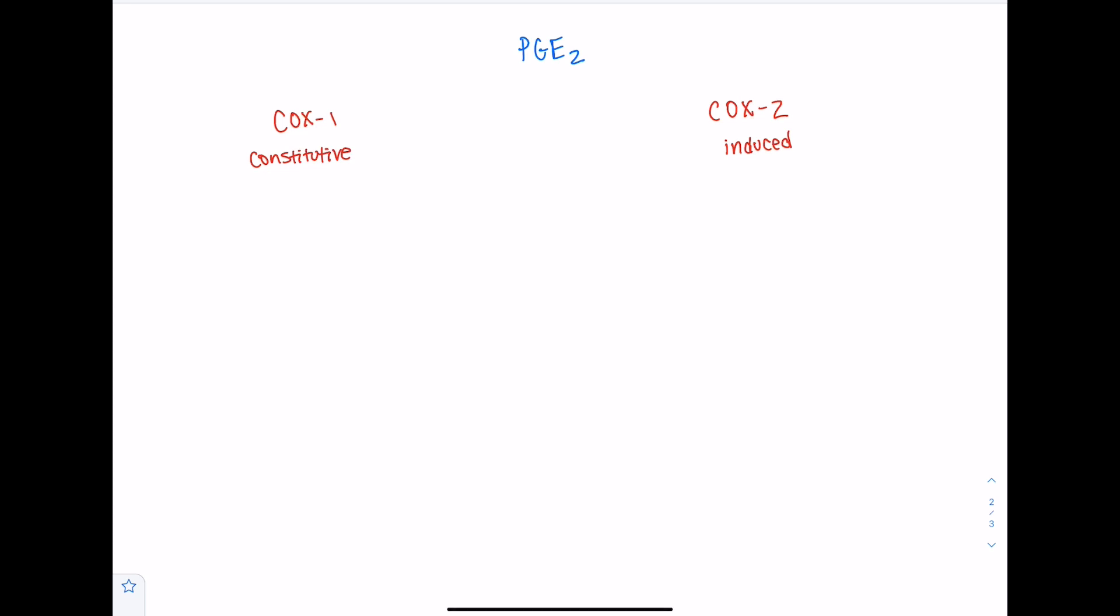So we're actually going to start with COX2, and the first function of PGE2 derived from COX2 is going to be as an algesic. And what an algesic is basically the opposite of an analgesic. An analgesic is a painkiller, while algesics are going to promote pain.